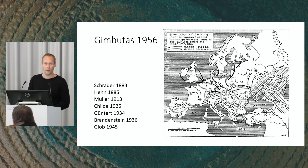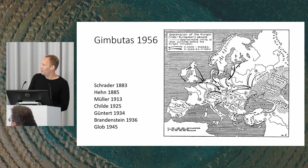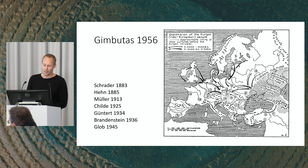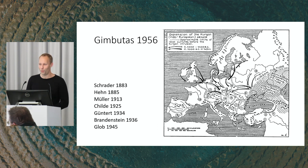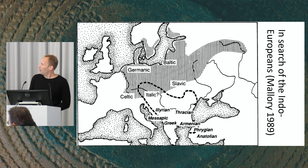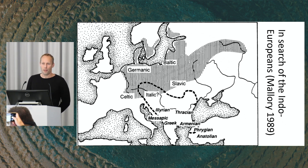This didn't come out of the blue — when you read the genetics papers they make it seem like it's Gimbutas's theory, but the steppe hypothesis is actually very old. Schrader came up with it in the late 19th century, then you have Heyn, Muller, Childe, Gunther, Brandenstein, and Globe, and only then do you get to Gimbutas. If you accept this scenario, the Corded Ware culture actually must have some significance for the spread of the Indo-European languages.